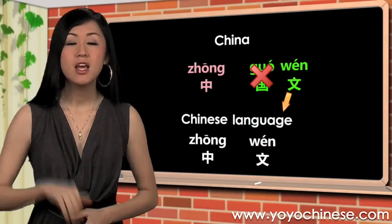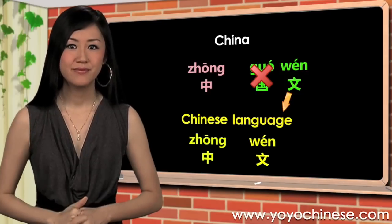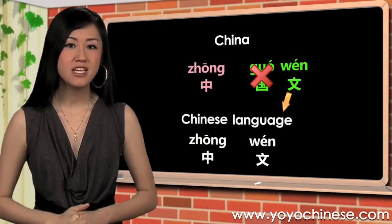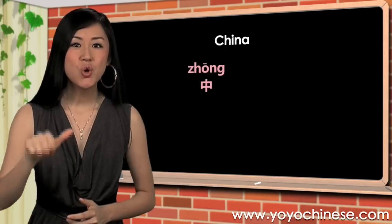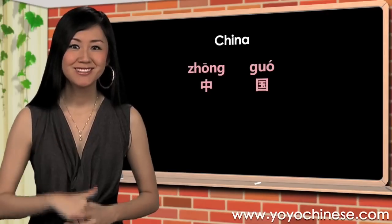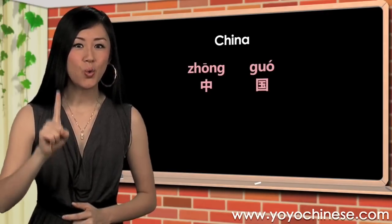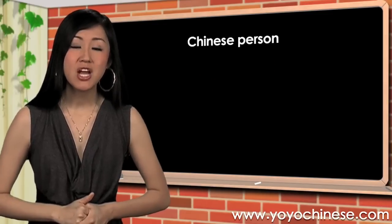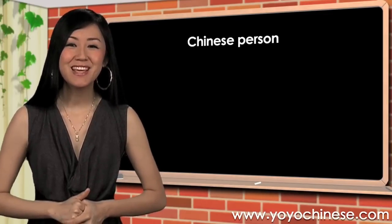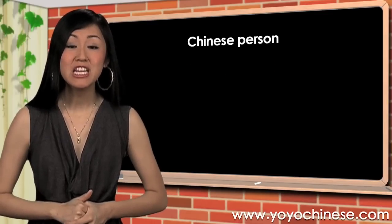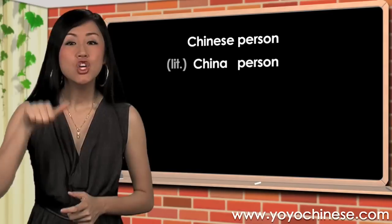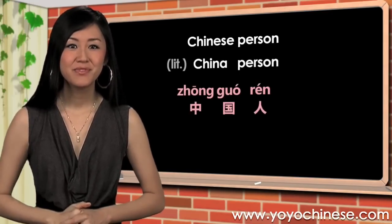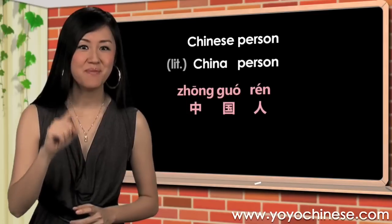Repeat after me: 中文, 中文. Say China: 中国, 中国. Do you still remember how to say 'Chinese person'? Yes, it's literally 'China person': 中国人, 中国人.